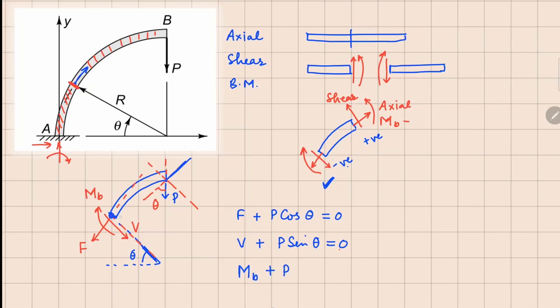And if this is your radius R, this angle is theta, this is also theta. So this becomes R cos theta.